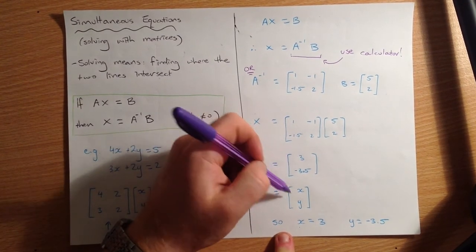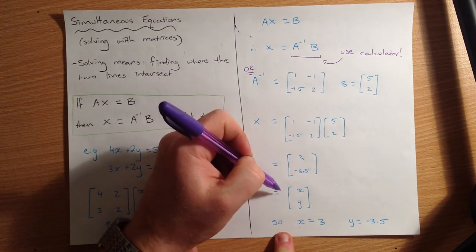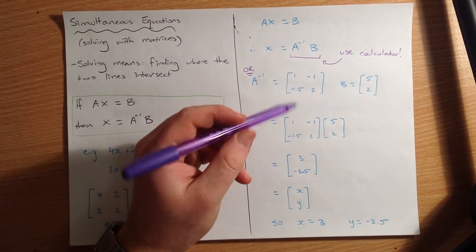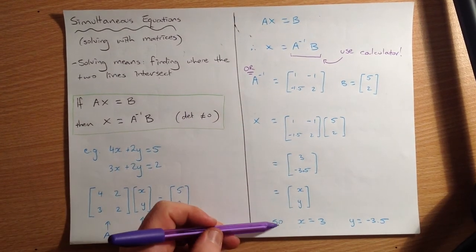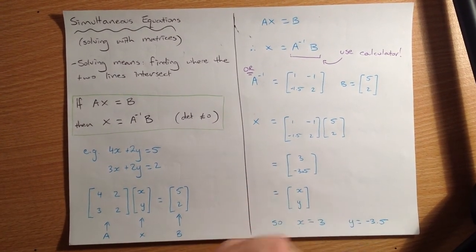That top bit is my X, so I've written that here. The bottom bit is my Y. So we've really just found the solutions in the matrix. So X equals 3, Y equals negative 3.5. I'll write that down here for you. So X is 3, Y equals negative 3.5.